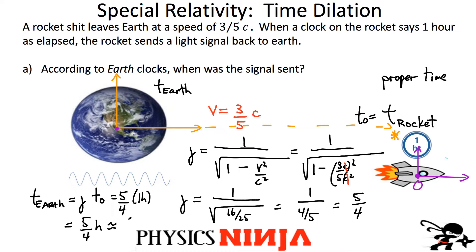You can keep it in hours or convert to minutes: 75 minutes. If one hour is 60 minutes, that gives 75 minutes. You can keep it in hours — 5/4 hours — that's fine for this problem.